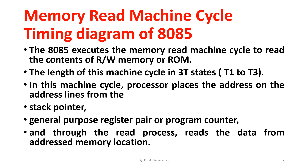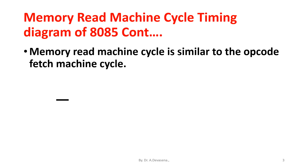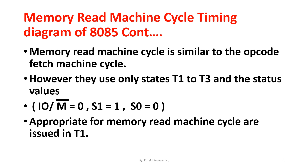Through the read process, the 8085 reads the data from the addressed memory location. The memory read machine cycle is similar to the opcode fetch machine cycle; however, it uses only states T1 to T3. The status values IO/Memory bar = 0, S1 = 1, S0 = 0, appropriate for memory read machine cycle, are issued in T1 state.